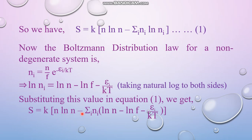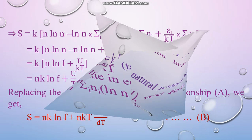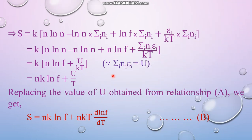Substituting into equation one, we get k times the bracket: N ln N minus the sum over i of N_i times the value of ln N_i, which is ln N minus ln f minus epsilon_i over kT. Multiplying out, this gives minus the sum over i of N_i ln N, plus the sum over i of N_i ln f, plus the sum over i of N_i epsilon_i over kT. The first two terms — N ln N and minus the sum over i of N_i ln N — cancel each other.